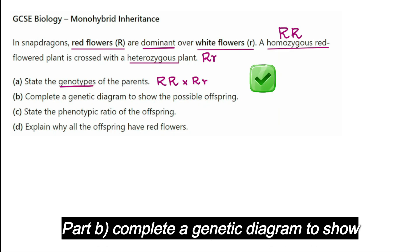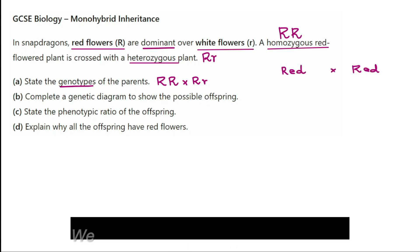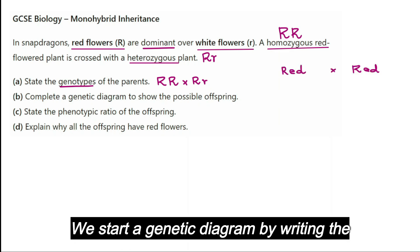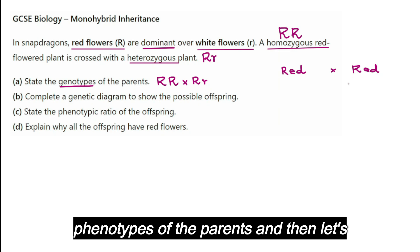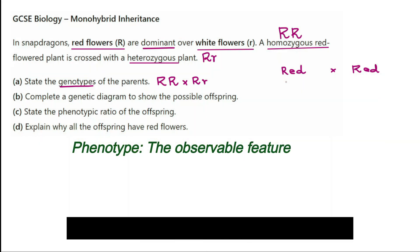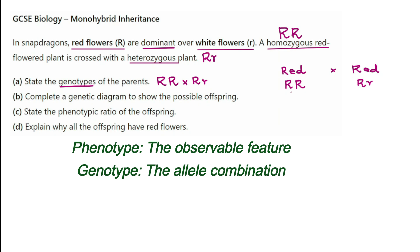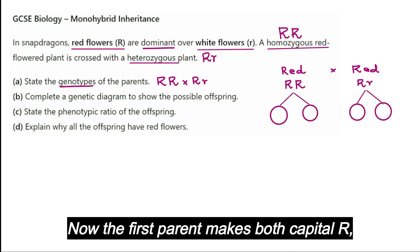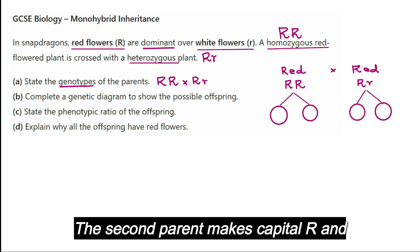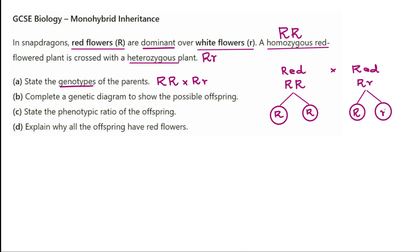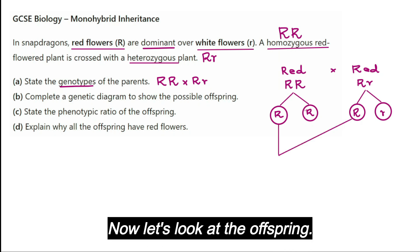Part B: complete a genetic diagram to show the possible offspring. We start a genetic diagram by writing the phenotypes of the parents and then their genotypes. Now we have to look at the gametes. The first parent makes both capital R, and the second parent makes capital R and lowercase r.